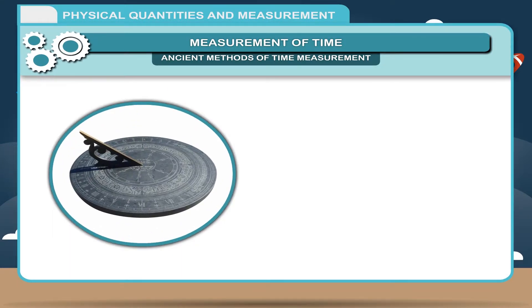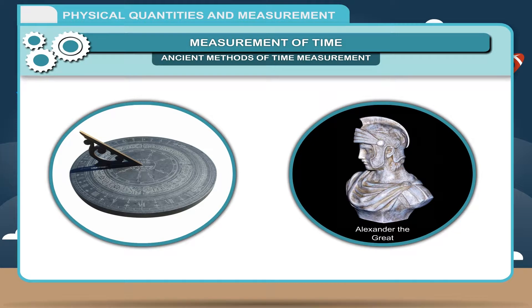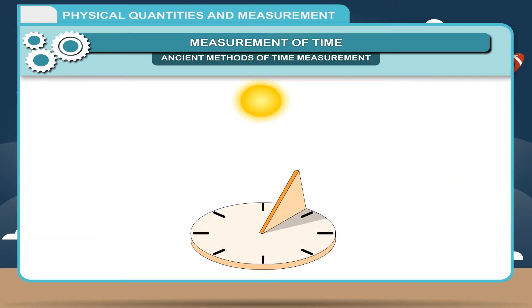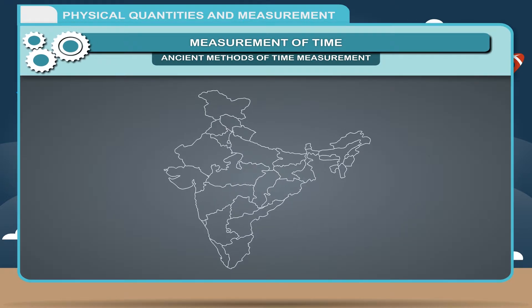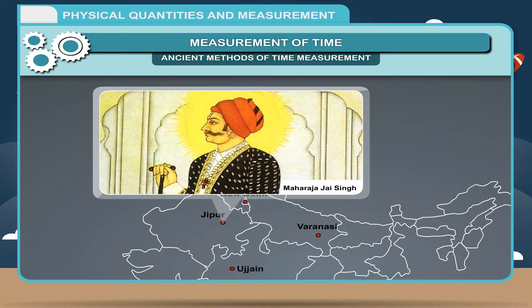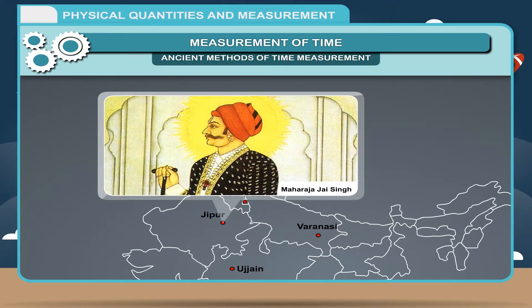The sundial was used to record time in days of Alexander the Great, 300 BCE. It is based on the fact that shadow of an object changes its position and length with the position of sun in the sky. Some historical sundials still exist in India. They are situated in Ujjain, Jaipur, Delhi and Varanasi. They are designed and built by Maharaja Jaisingh of Jaipur.